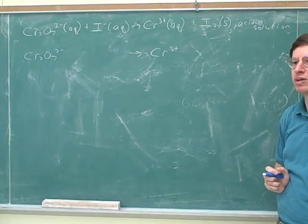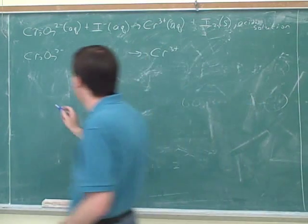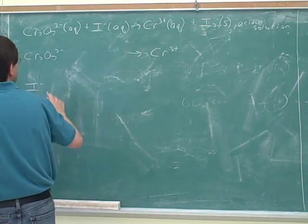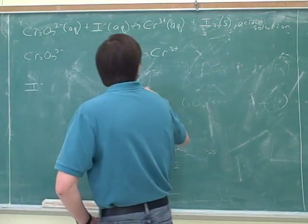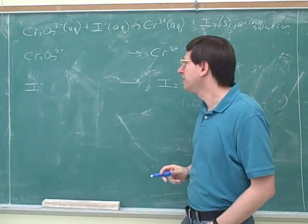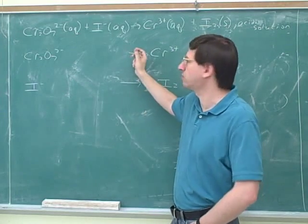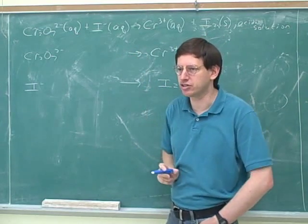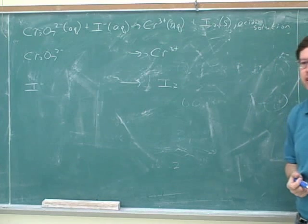And what would the other half reaction be? I think it's pretty clear that the iodine should both go in the same half reaction and the chromium should both go in the same half reaction. So that's that first step of breaking this into half reactions.